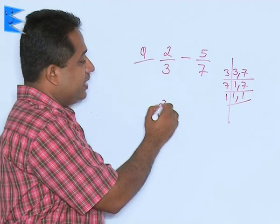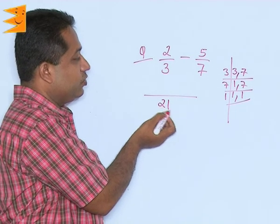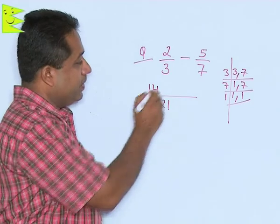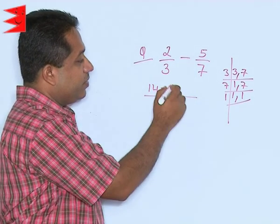Now, once we get the LCM as 21, then we see 3 goes 7 times. So, 7 into 2, the numerator on the left side will become 14 minus 7 is going 3 times here, 3 into 5 becomes 15.